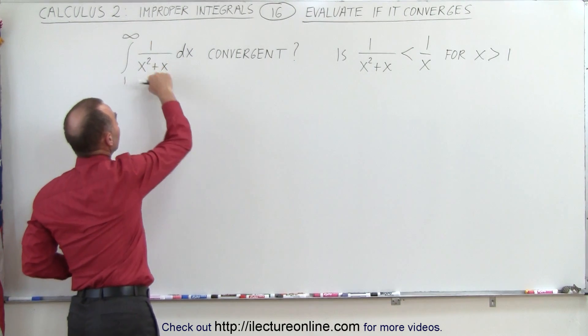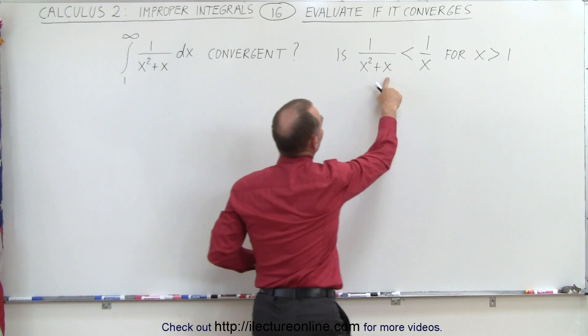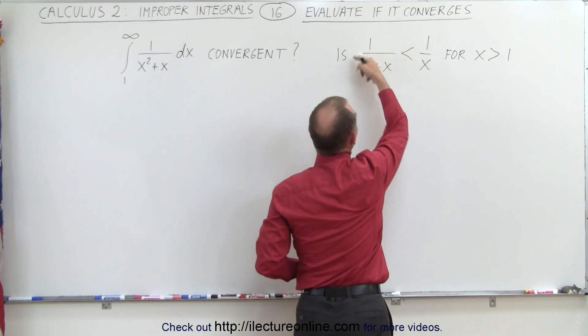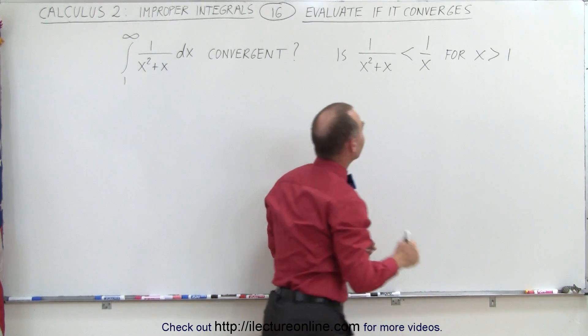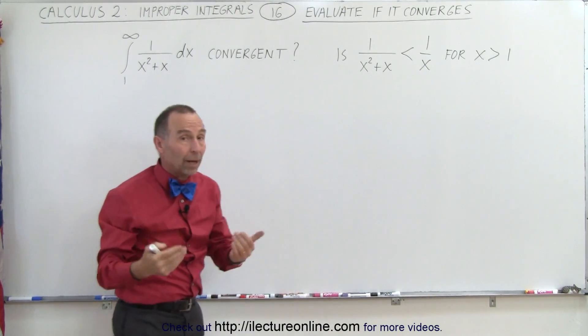When we take the integrand, 1 over x squared plus x, and compare that to 1 over x, we can see that this is indeed smaller than that for all x greater than 1, which means that it's probably convergent.